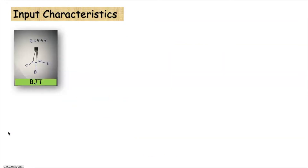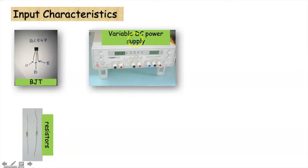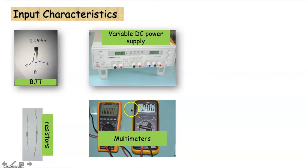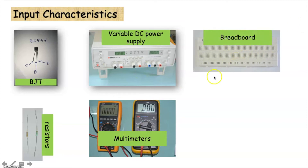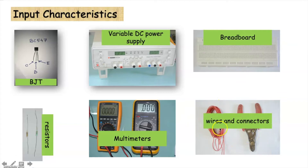To determine the characteristics practically, we need a transistor. Here we will use a BJT BC547, which is an NPN transistor. We also need resistors, a variable DC power supply system, multimeters, and of course some connecting wires.